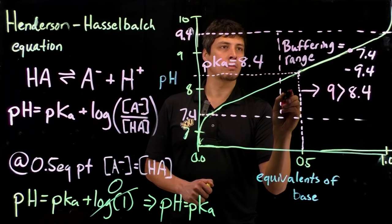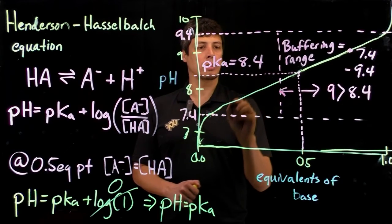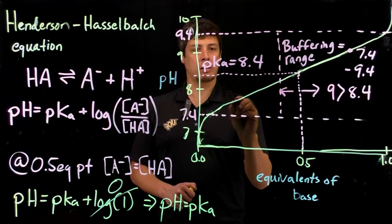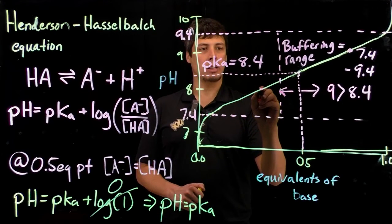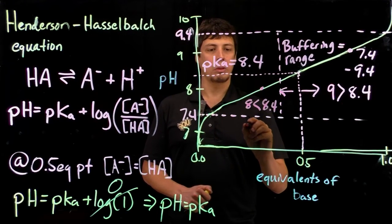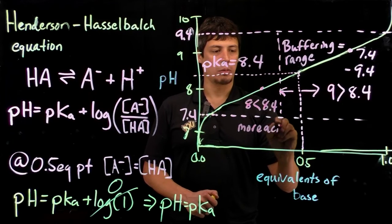If it's less, this could be the opposite. Let's say we pick just 8. So 8 is less than 8.4, so we're going to be more acidic. Therefore, there will be more concentration of HA.